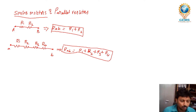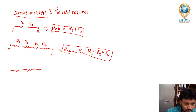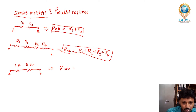Now a simple example with numerical values: if we have two resistors, one is 1Ω and this is 3Ω, what is the total resistance? That is very easy. RAB is equal to 1 plus 3, so it is 4Ω. RAB is equal to 4Ω.